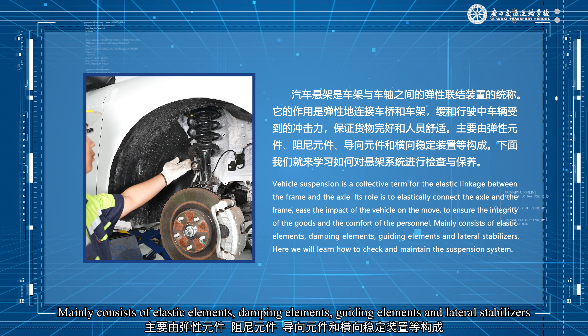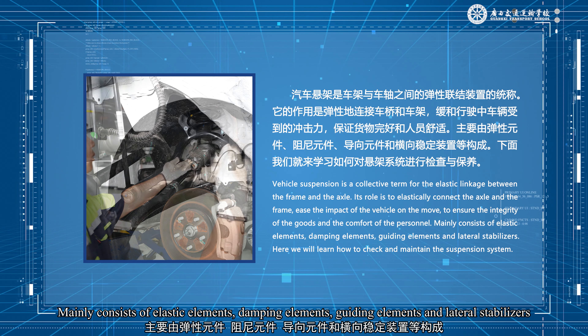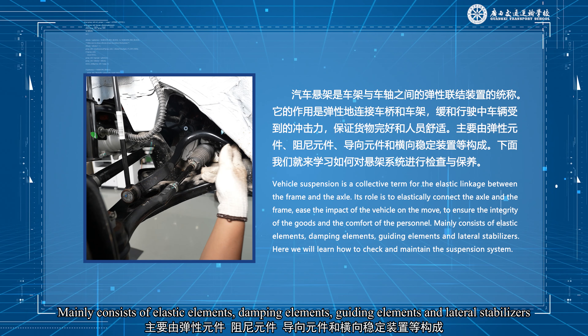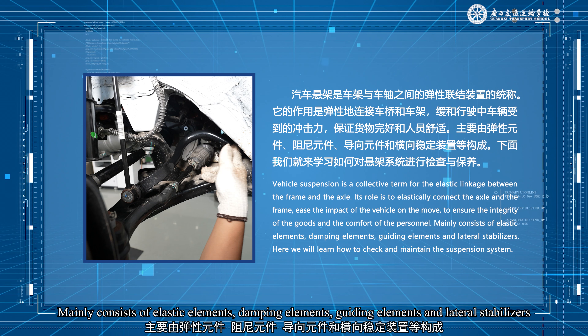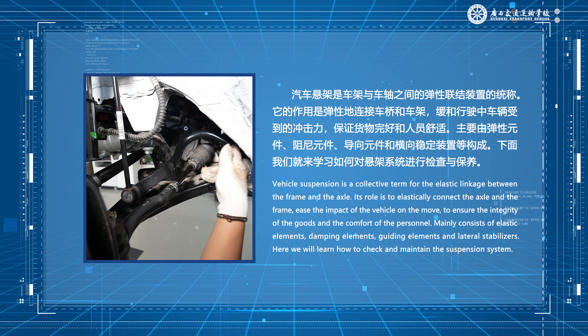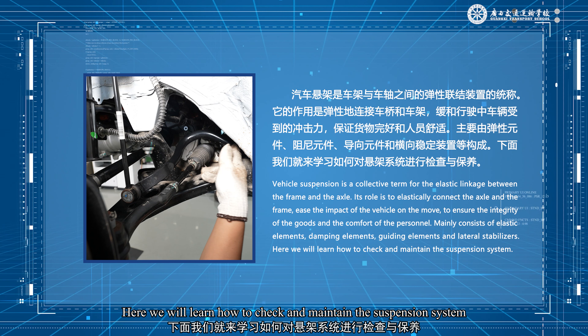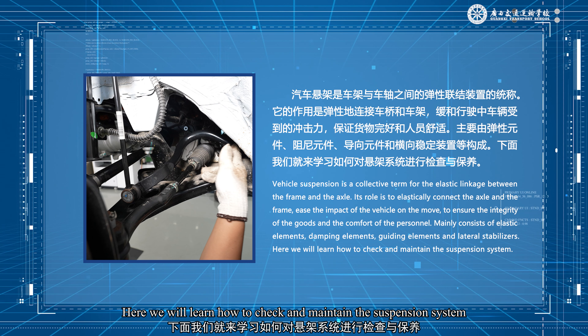The suspension system mainly consists of elastic elements, damping elements, guiding elements, and lateral stabilizers. Here we will learn how to check and maintain the suspension system.